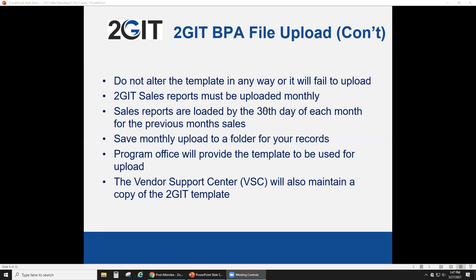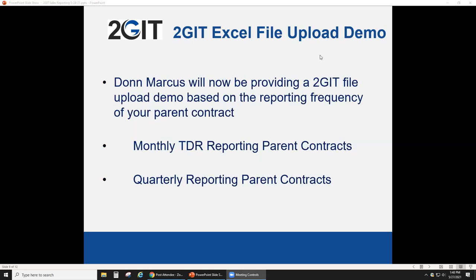The program office will be providing the template for the upload — they've likely gotten it out to all contract holders at this point. If you manipulate the template and can't figure out what you've changed, reach out to the Vendor Support Center. They maintain a clean blank copy of the to-Get template. Just let them know you're a member of the to-Get BPA, provide your contract number so they can verify, and they'll send you a fresh blank template.